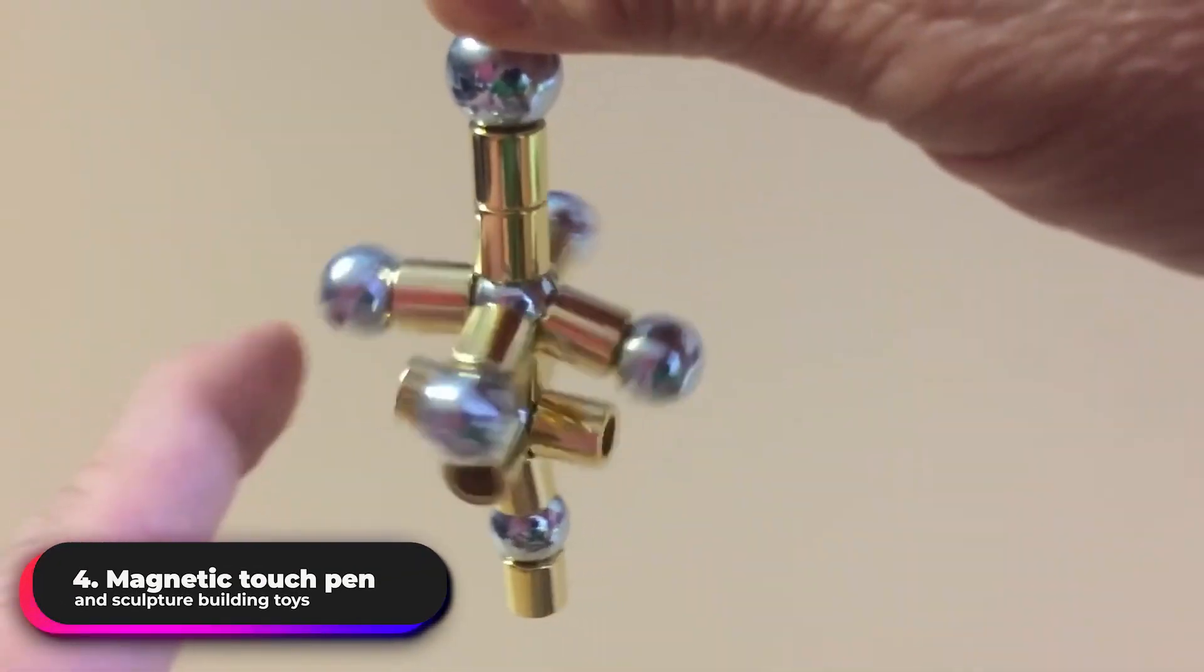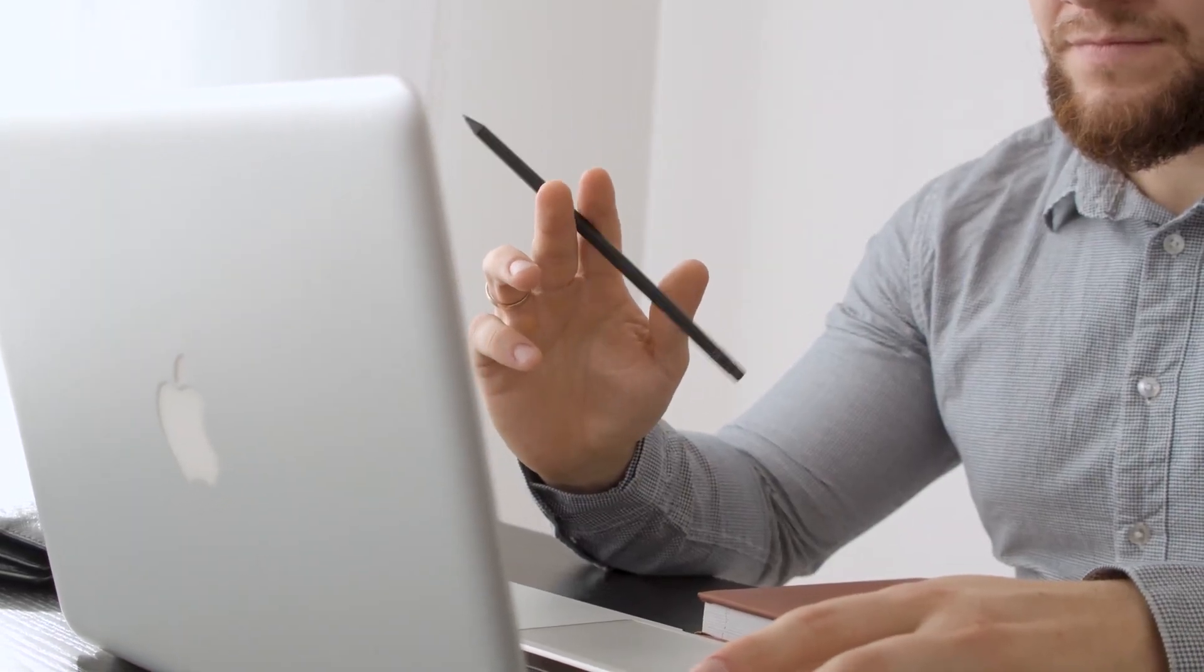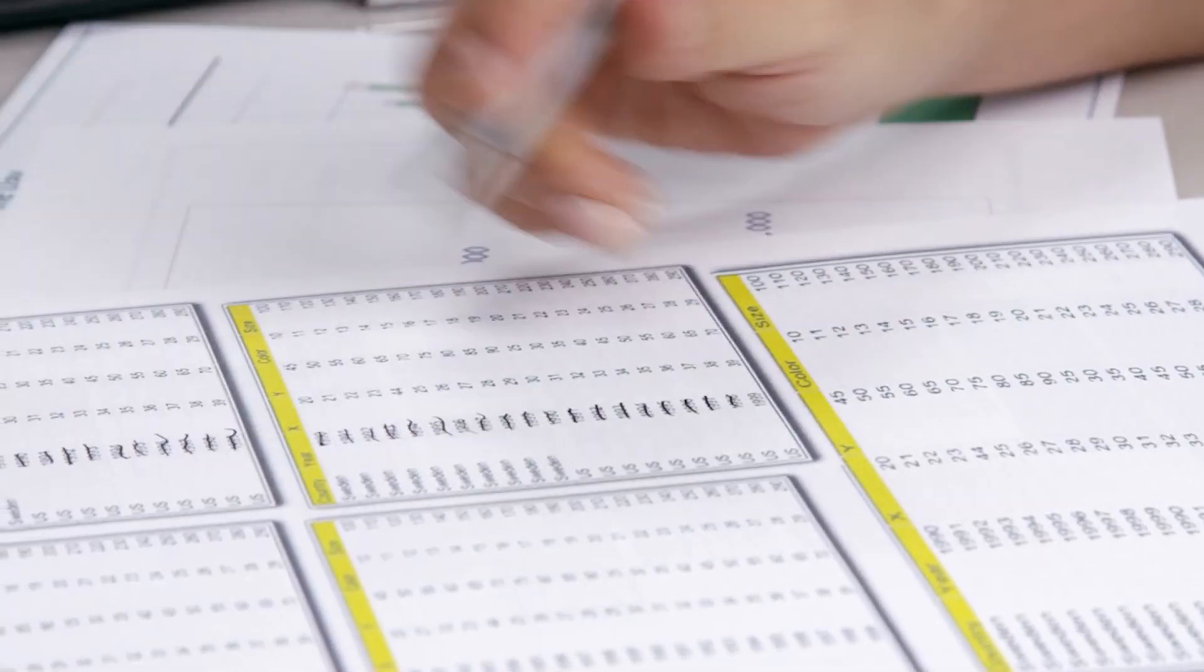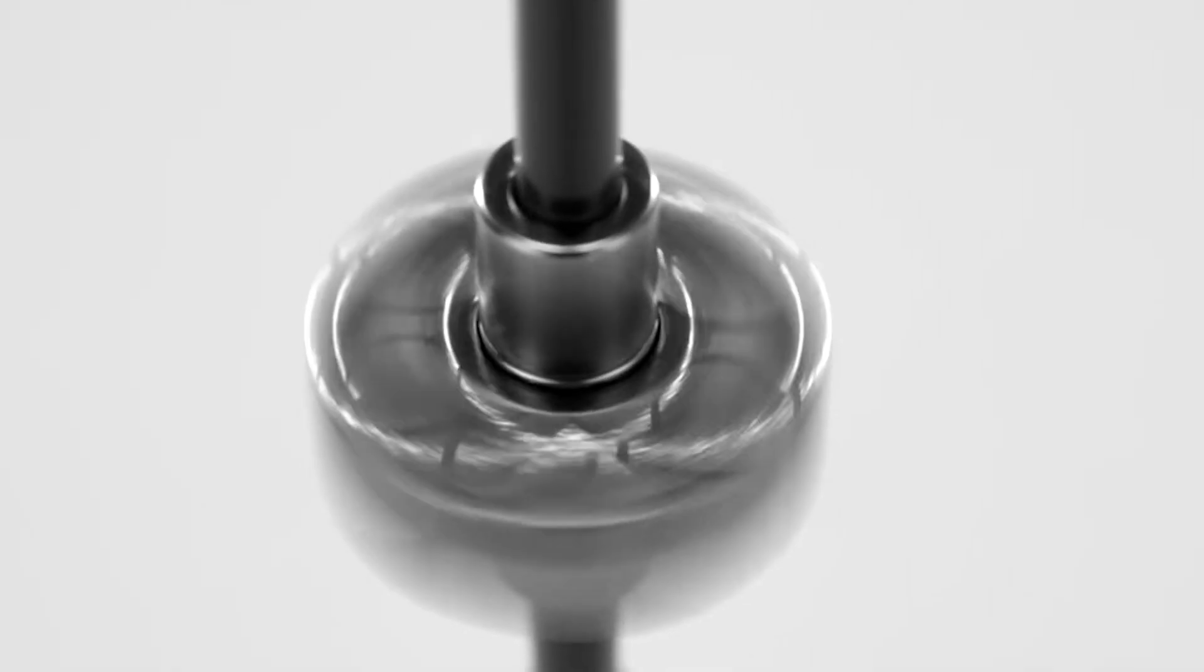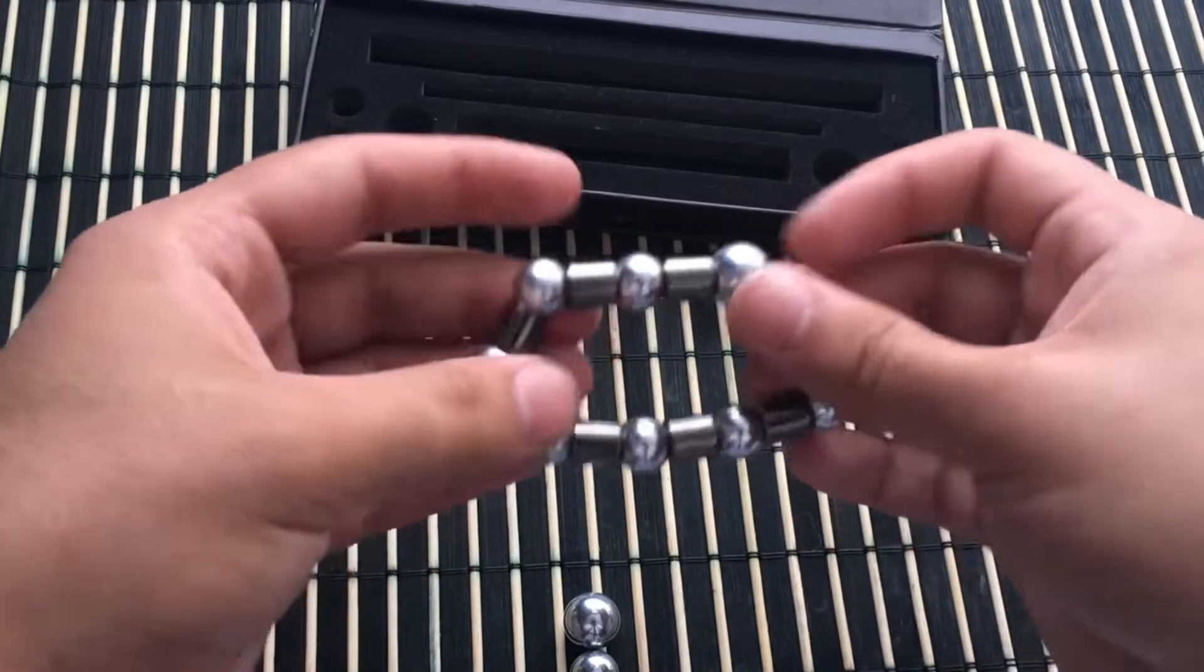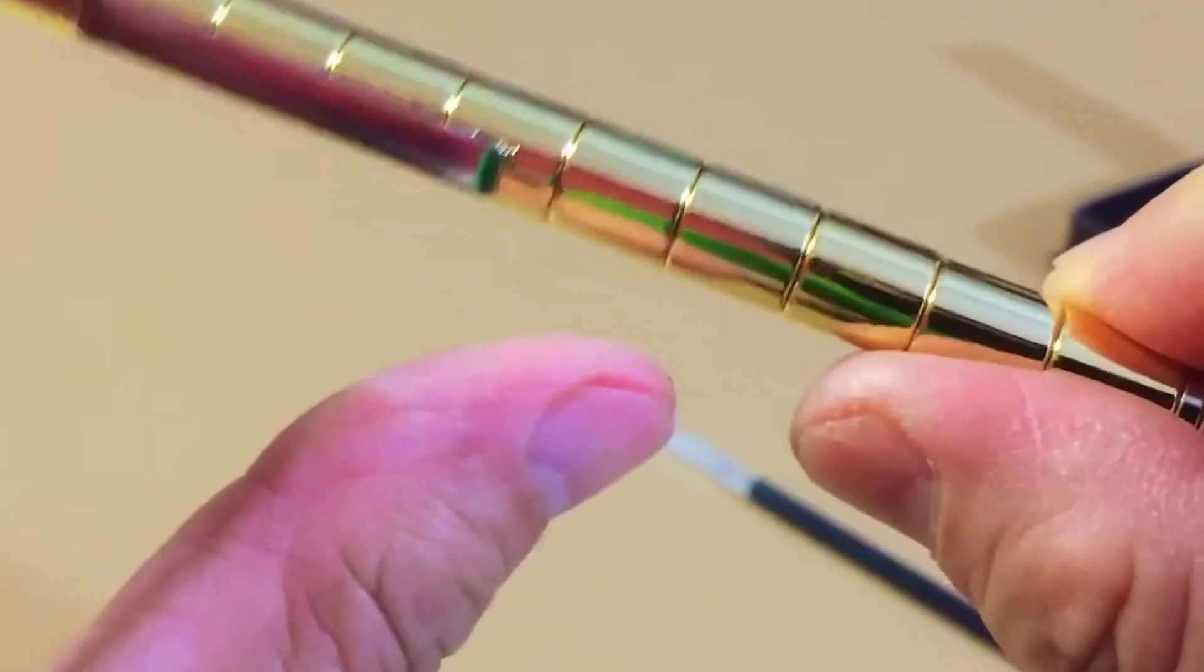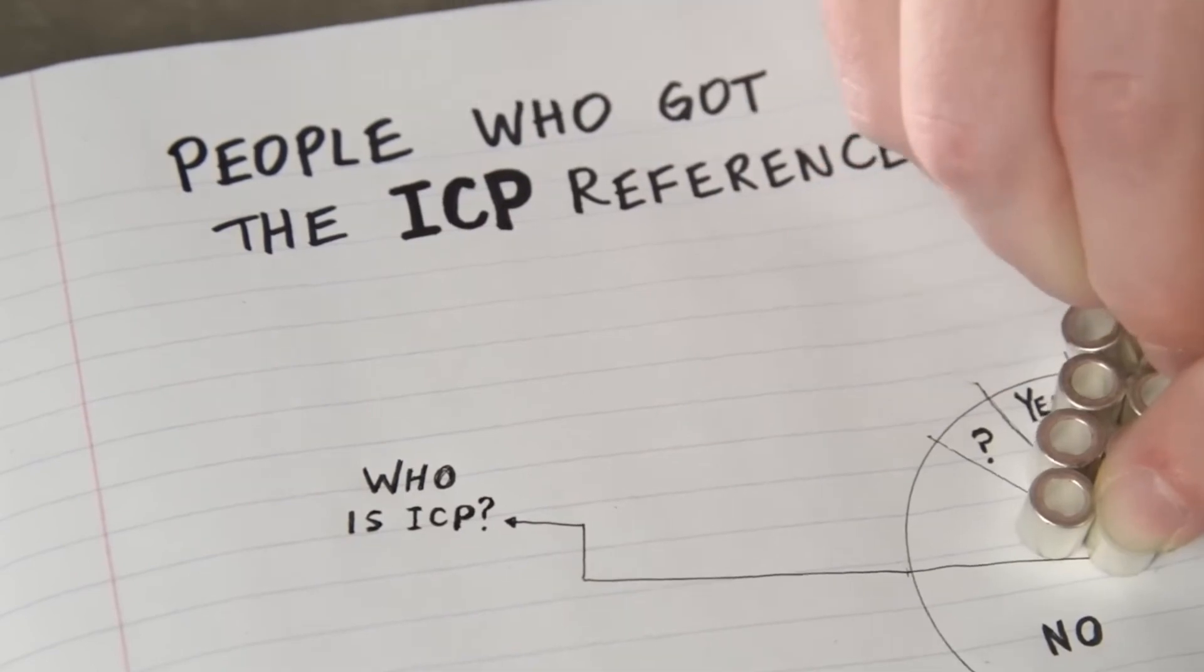Magnetic Touch Pen and Sculpture Building Toys. Do you also frown and spin your pen between your fingers when you're stuck on a problem? So, instead of the same boring pen, how about we replace it with a sustainable gadget that unlocks another dimension in your mind? This fidget toy is not only great for writing, but it also allows you to create an infinite number of shapes with its pieces. It not only has great magnetic power, but because of its long lifespan, it may be passed down to future generations.